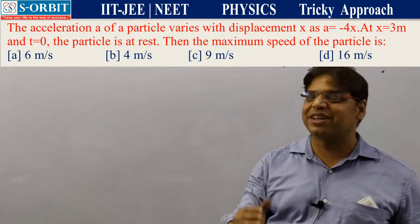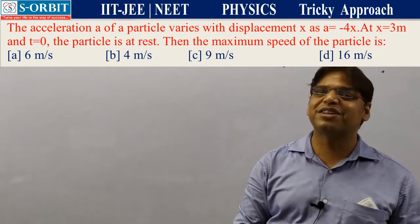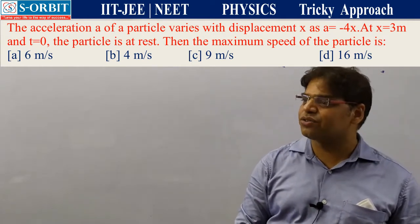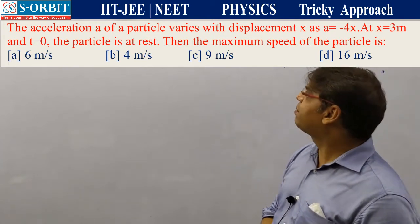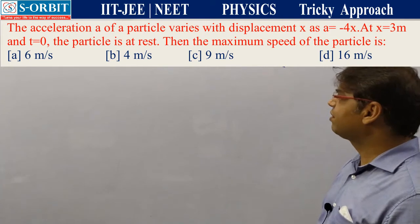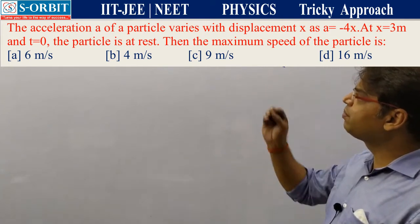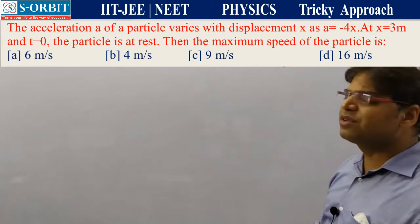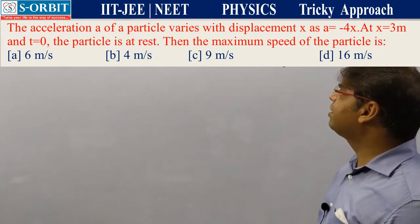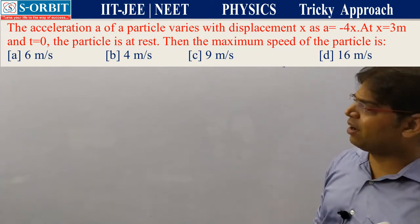Hello, my dear students. In the last class, I completed the chapter on motion in a straight line. The acceleration of a particle is given by a = -4x. At x = 3 meters and t = 0, the particle is at rest. We have to find the maximum speed of the particle.